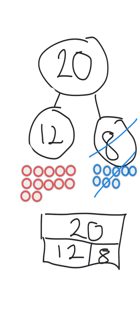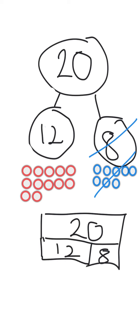Let me show you. 20 take away 12 — if I take away 12 what am I going to be left with? Shout it out now. That's right, it's 8. I've still got 8. 20 take away 12 equals 8. Let's try that again with the other part. If I've got 20 and I want to take away 8 this time, what am I going to be left with? Shout it out now. That's right, it's 12. I've still got 12. 20 take away 8 equals 12.